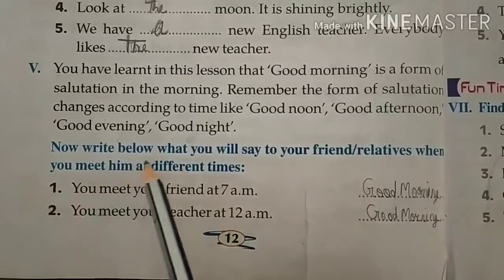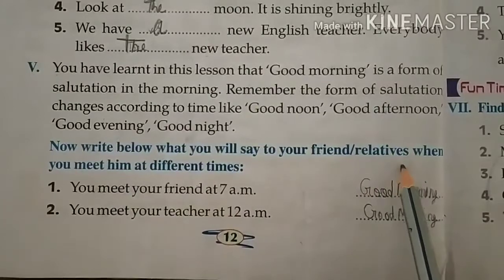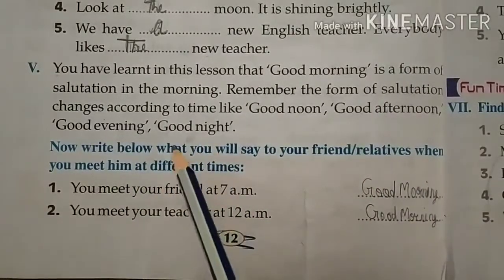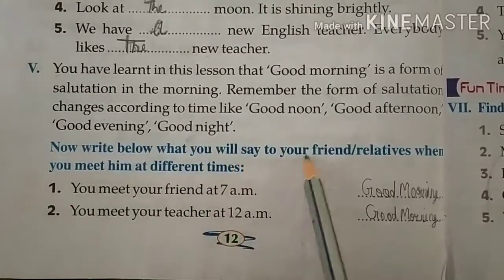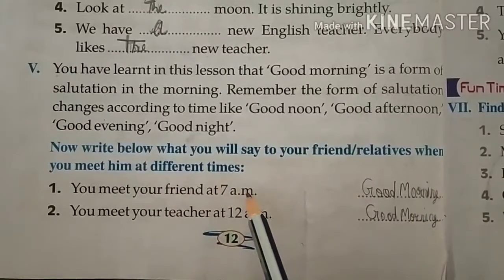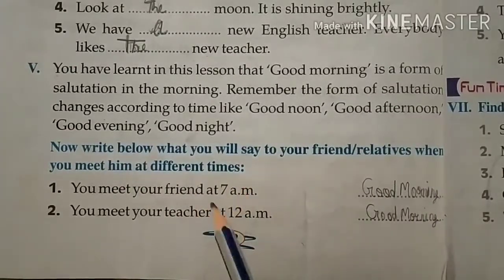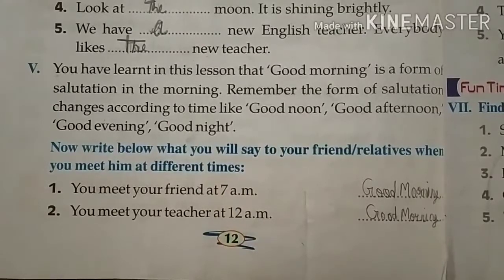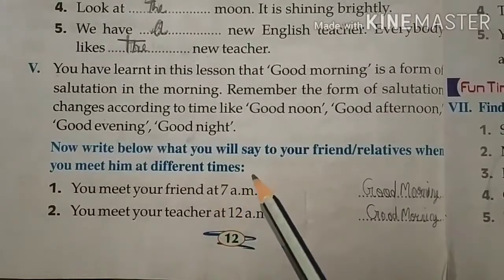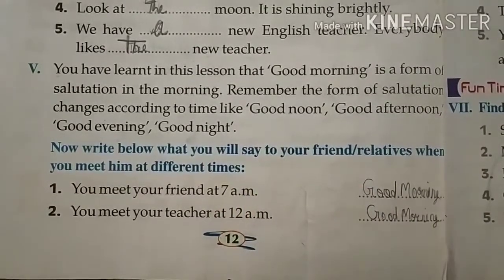देखें — Now write below what you will say to your friend's relatives when you meet them at different times। तो आपको वो salutation लिखना है जब आप अपने friend या relative से मिलते हैं। जिस समय आप मिलते हैं, उस समय का salutation लिखना है — सुबह मिलते हैं तो Good Morning, दोपहर में Good Noon, शाम को Good Evening, और last में जाते हैं तो Good Night।